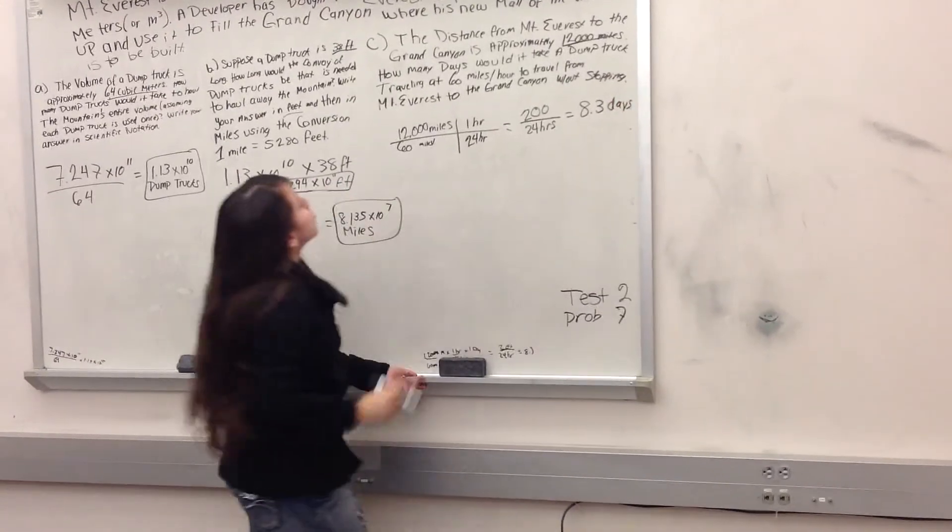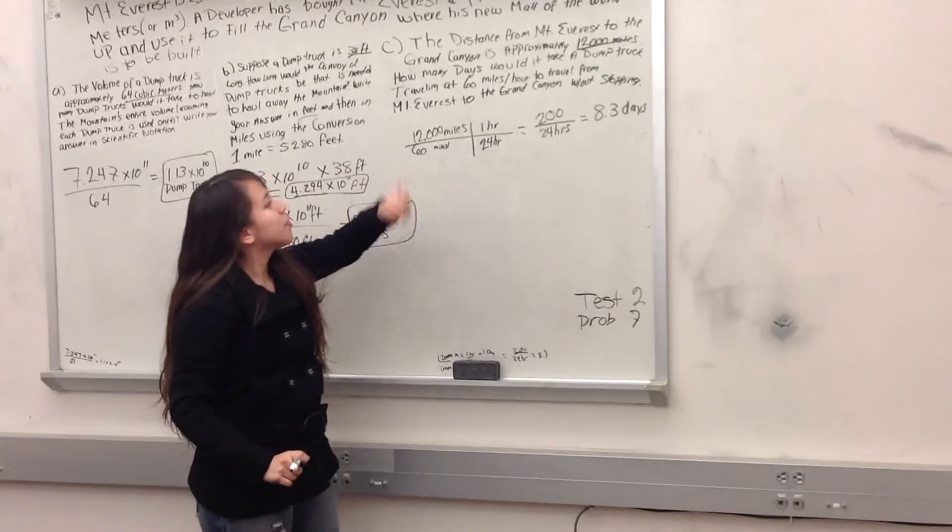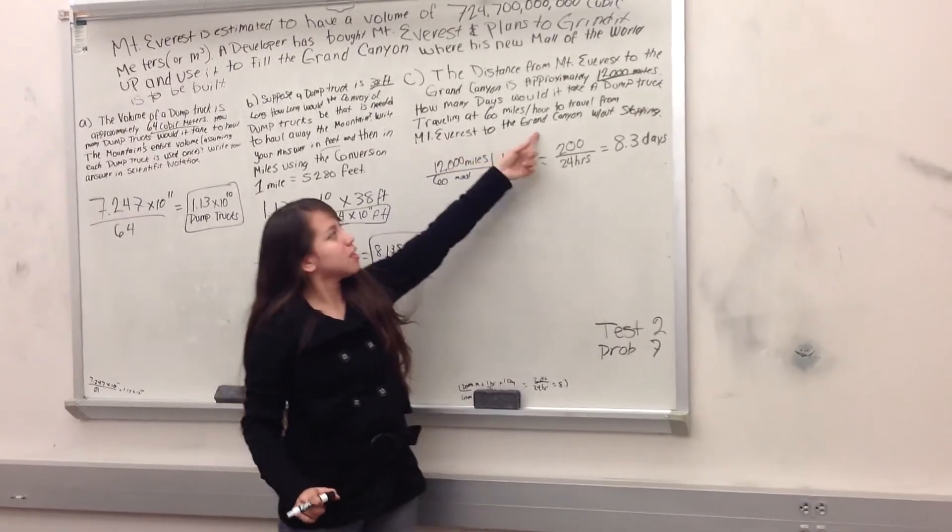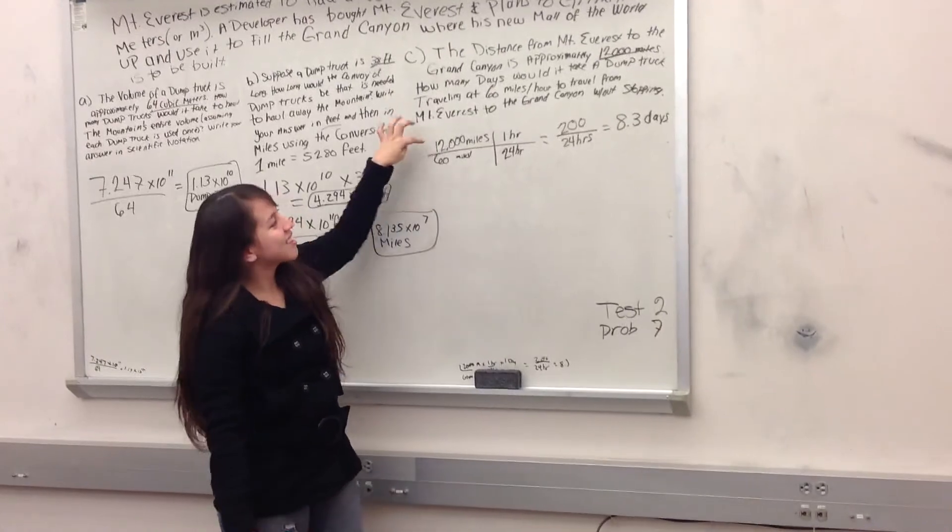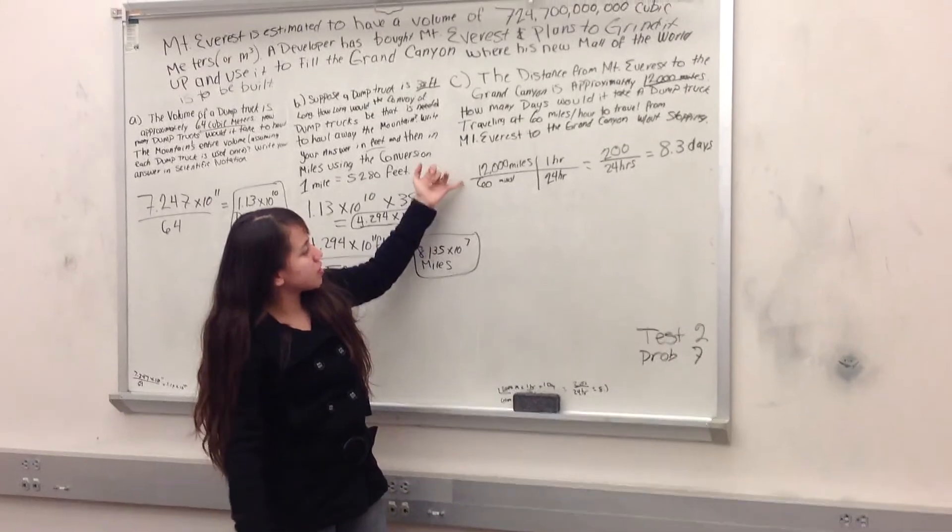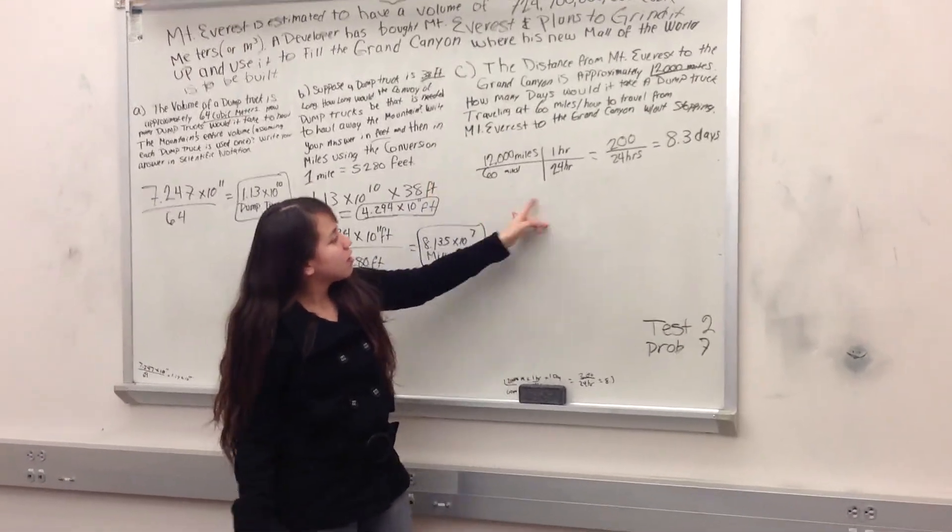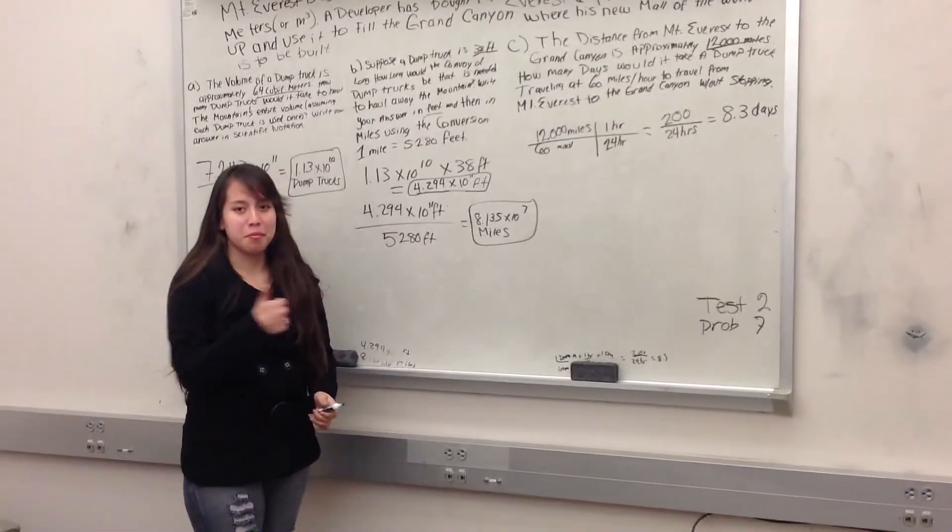So it would take a truck 8.3 days to travel from Mount Everest to Grand Canyon, because the distance from Mount Everest to the Grand Canyon is 12,000 miles, and traveling 60 miles an hour, it's 8.3 days. That's my problem.